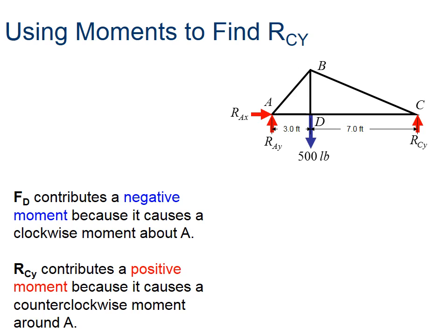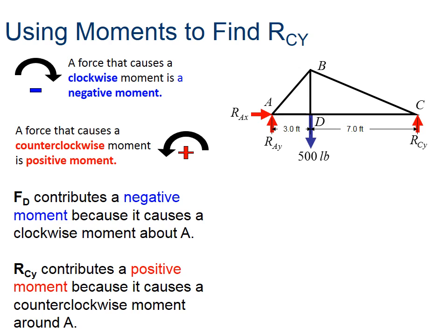So the first equation we always want to use is the sum of the moments. And we're going to actually find the sum of the moments about RCY, or to find RCY. But one of the things we want to remember is that what is a positive moment and what is a negative moment. So pay special attention to what just popped up on your screen. If something is clockwise, it is negative. If something is going counterclockwise, it is positive. So let's take a closer look at this at what's going on here.